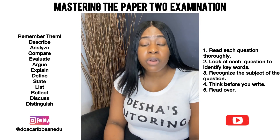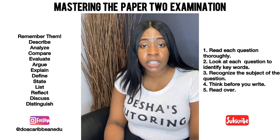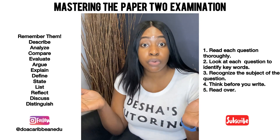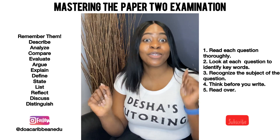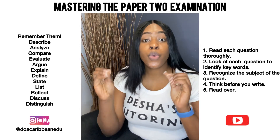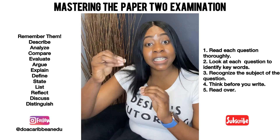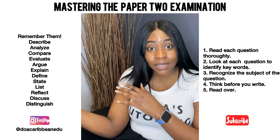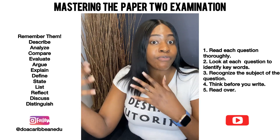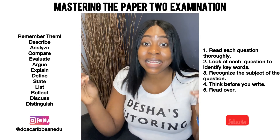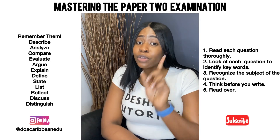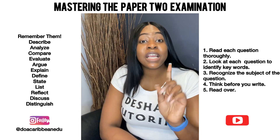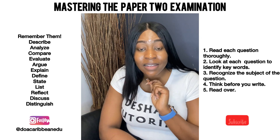If a question asks you to discuss something, it requires you to write about that thing in detail. For example: 'Discuss the role of four types of tissues found in plant roots.' You are going to identify the four types of plant tissues and then write about their roles in detail.